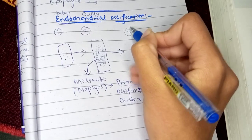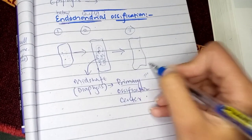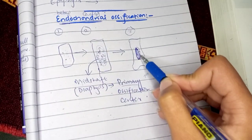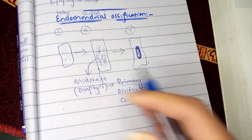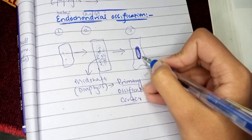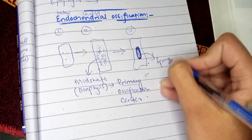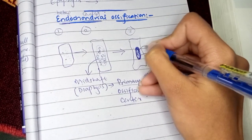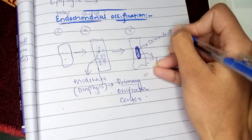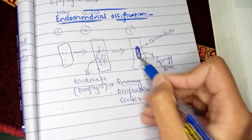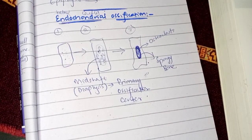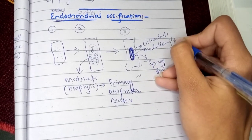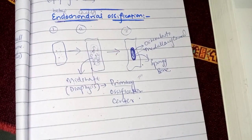In the next step, the bone that has formed in the central area replaces a small area of the cartilage with spongy bone. Then in the central part, osteoclasts come and resorb bone from the center, forming a gap referred to as a medullary canal, in which bone marrow will deposit.